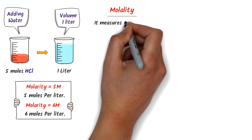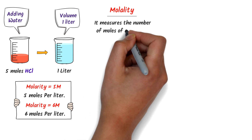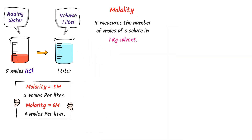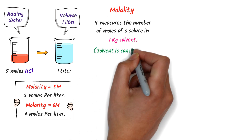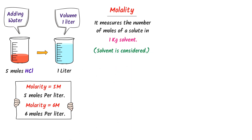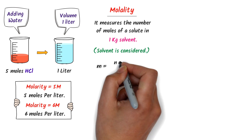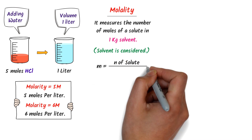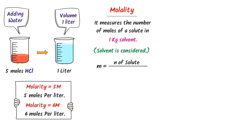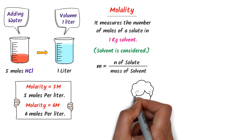Molality measures the number of moles of solute dissolved in 1 kg of solvent. Remember that the solvent is considered in molality. Molality is denoted by small m, and its formula is equal to number of moles of solute divided by mass of solvent.